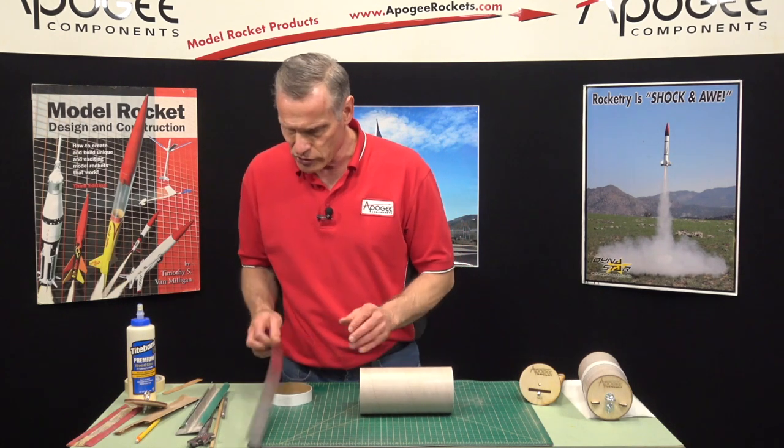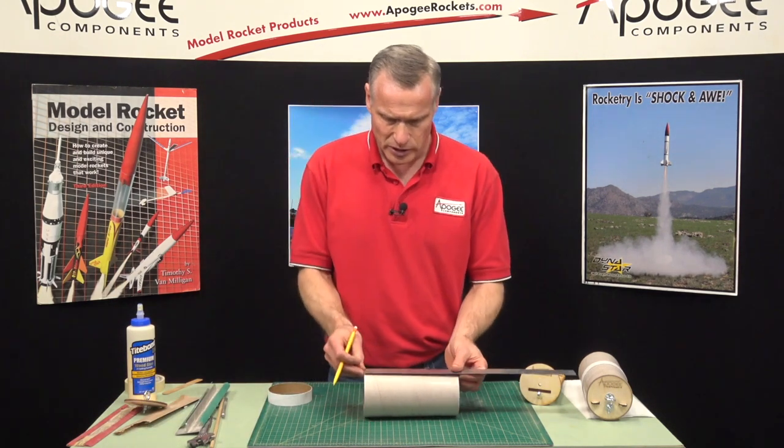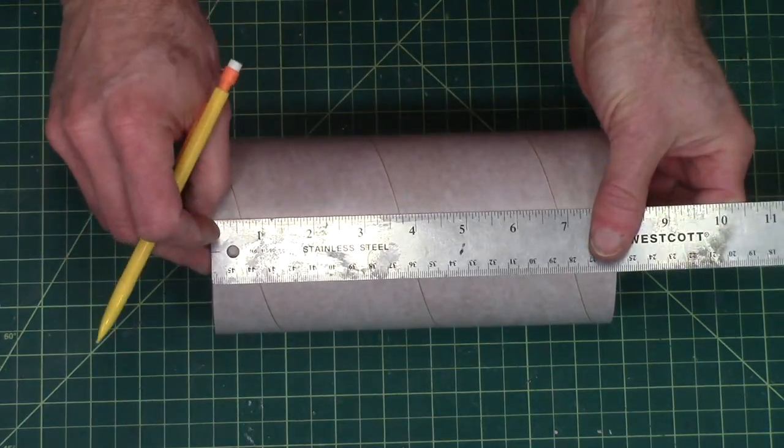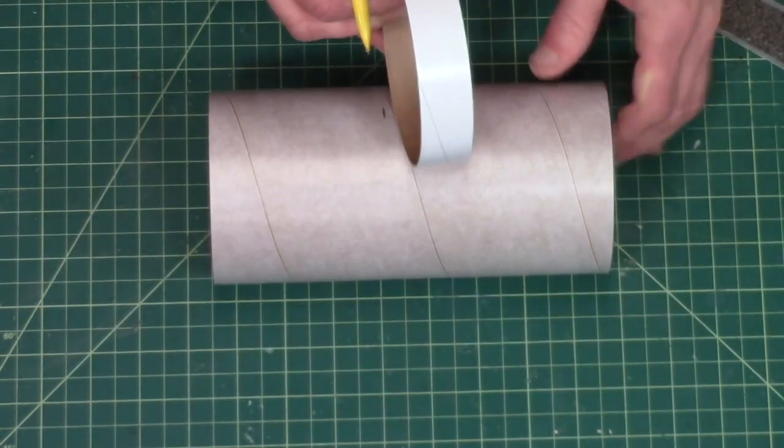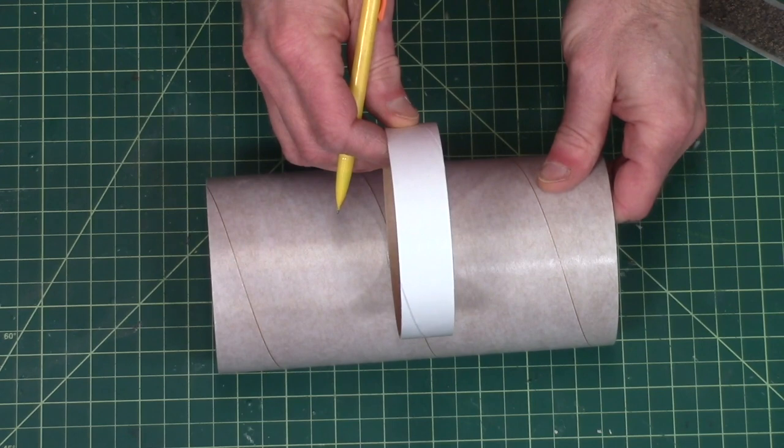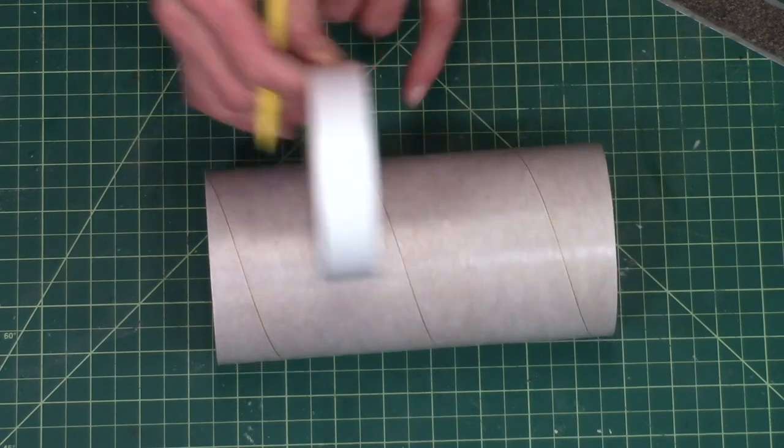So what you need to do first is to mark it and you want to mark it three and a half inches from either end because that's where the switch band is going to go and then you'll have equal amount on both sides.